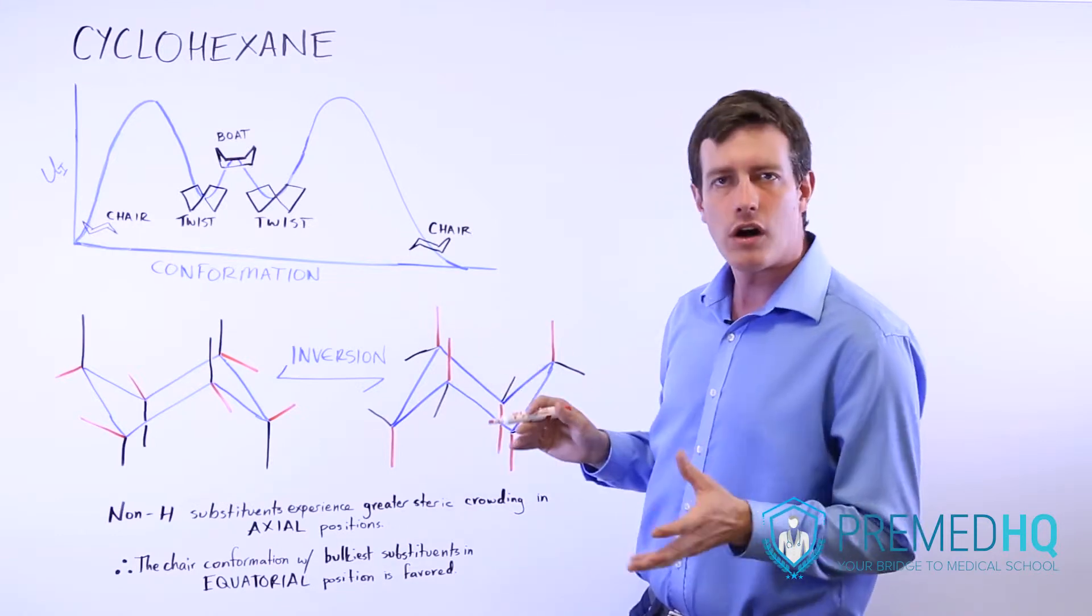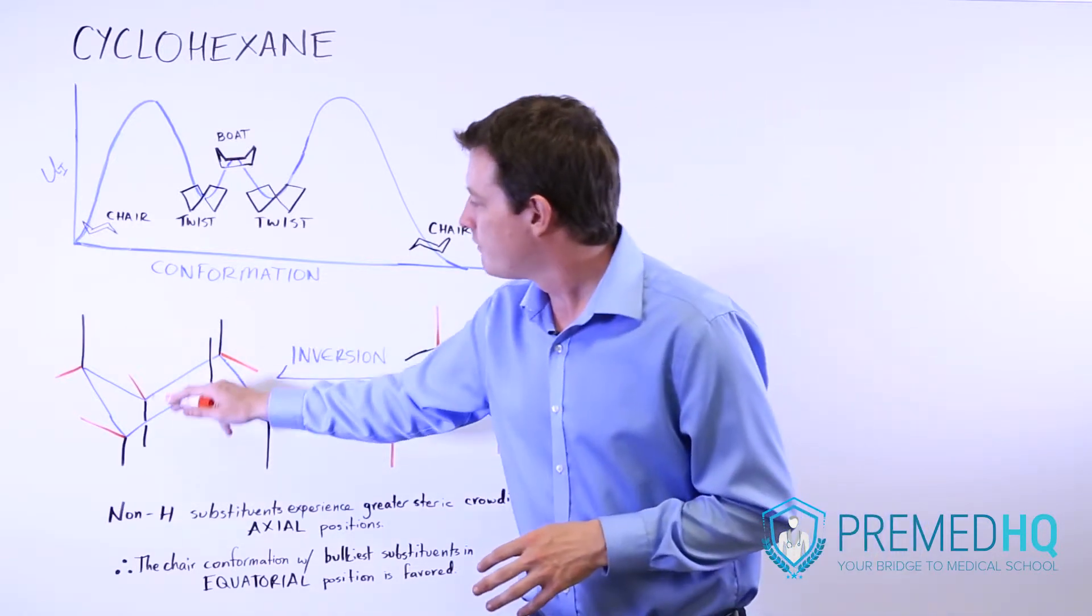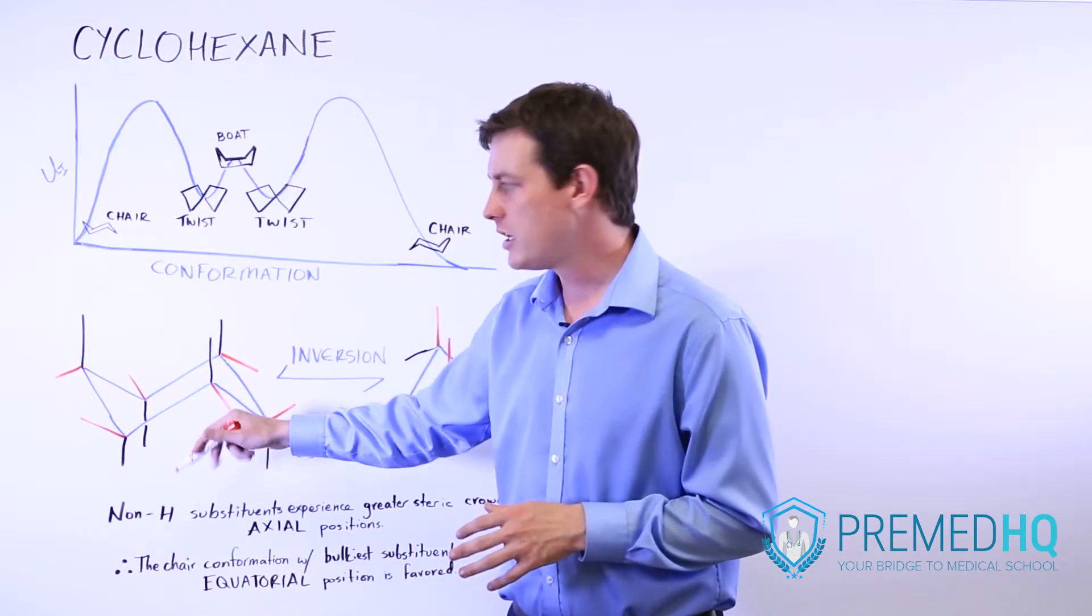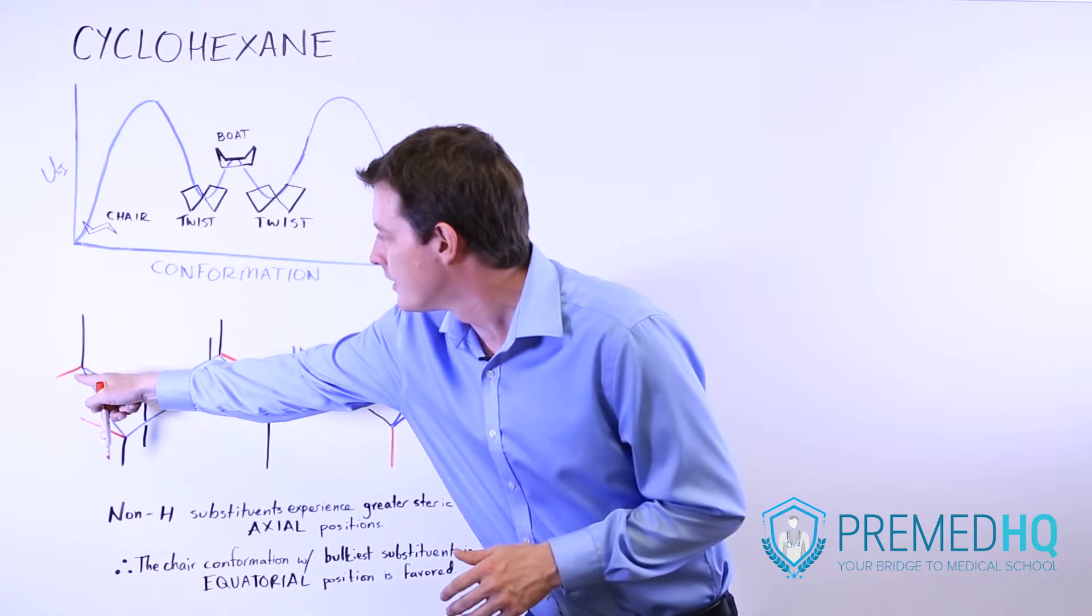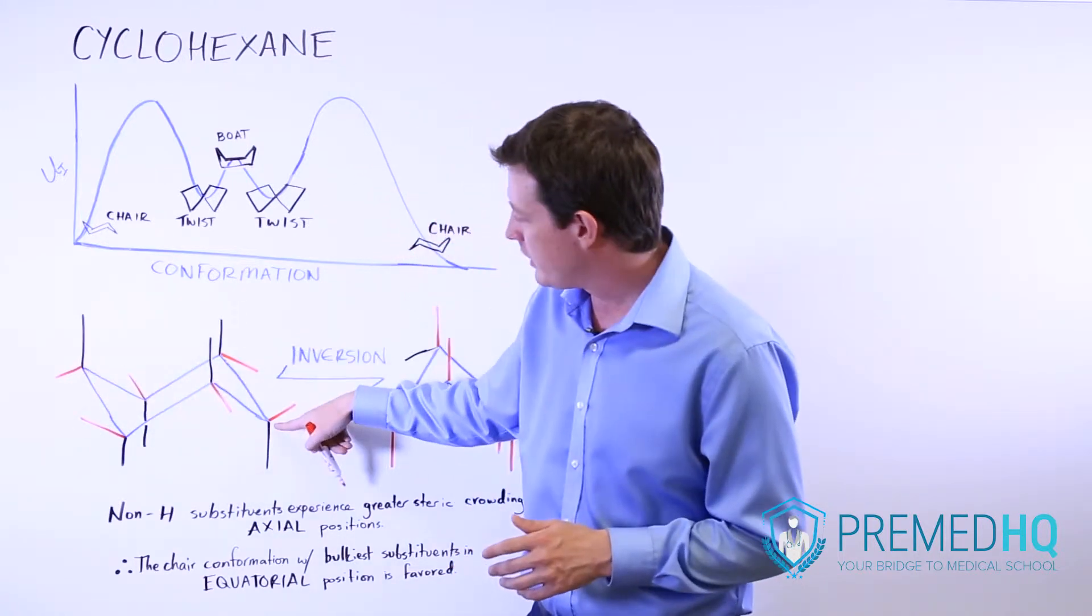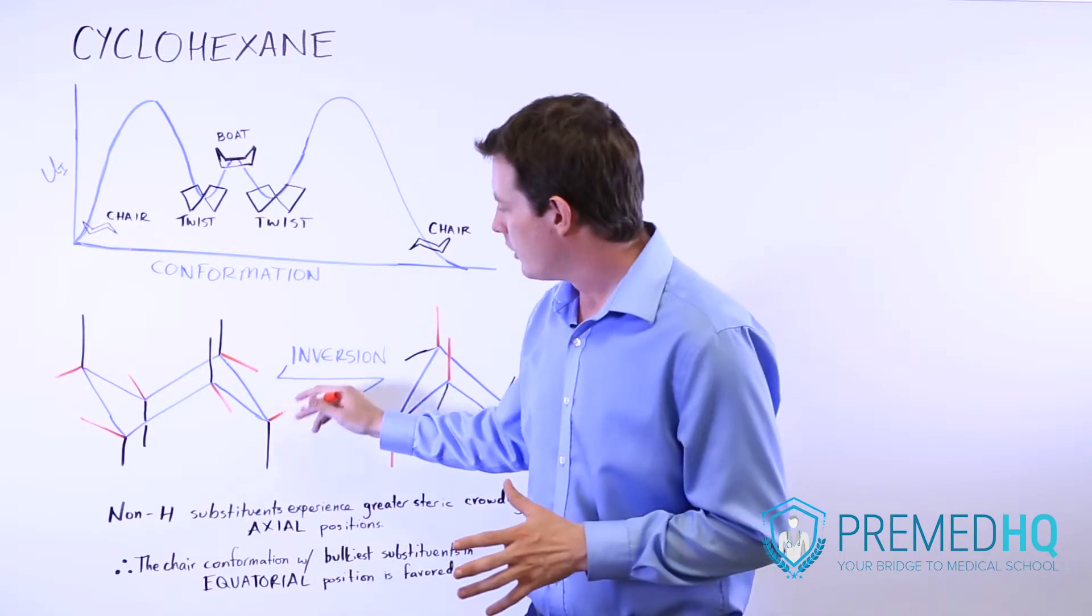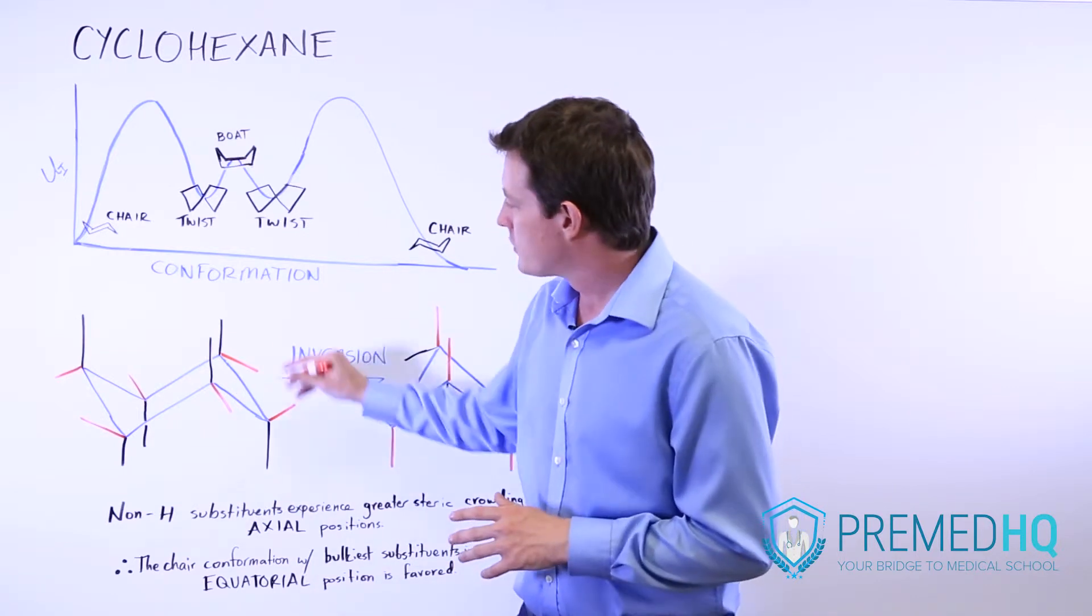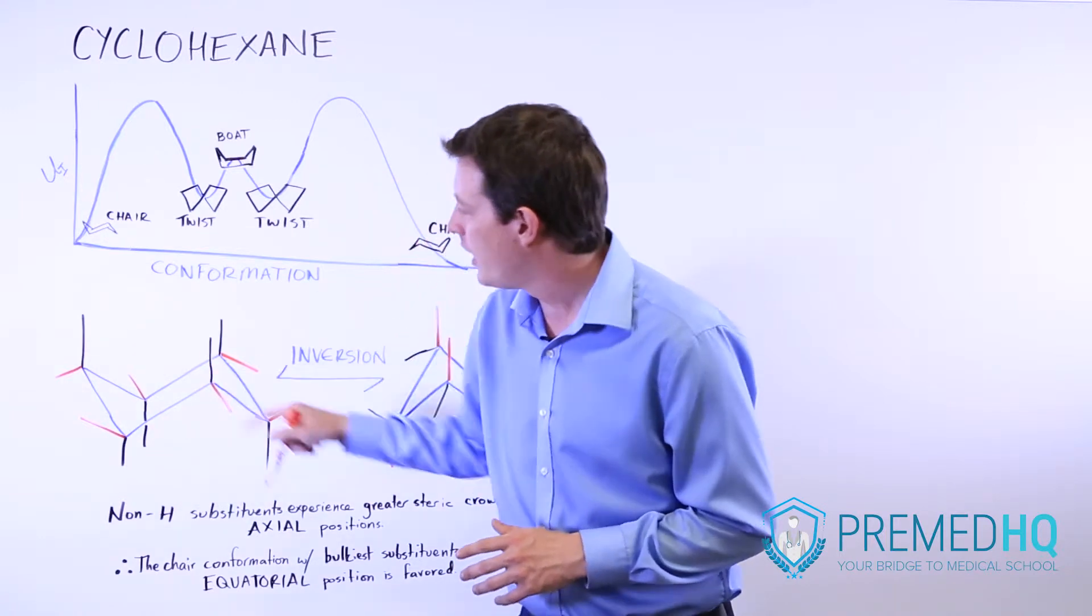A little note when you're drawing your cyclohexanes is that usually it's fairly easy to figure out how to draw the axial conformations. At this terminal point, you draw the axial one up if it's the high terminal point, and you draw the axial substituent down if it's the low terminal point, and you just alternate from there. So low, high, low, high, low, high.